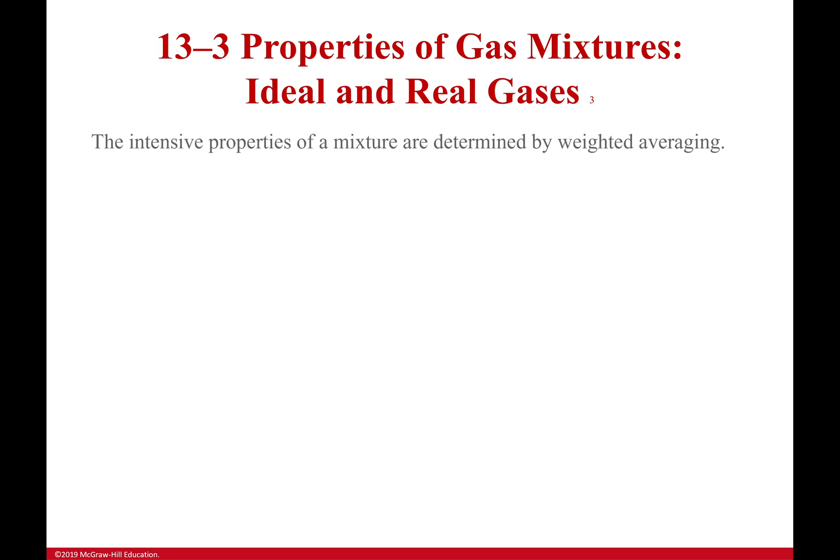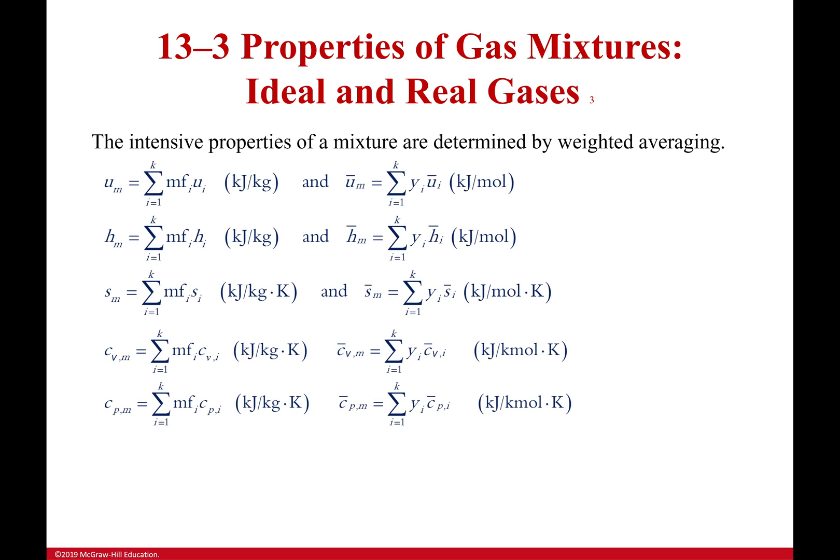Let's keep on moving forward. Now if you want the intensive properties, not the overall thing but the per mass for your mixture, then you have to use weighted averaging. We have equations, once again we're just going to divide this in half. And doing that I have mass on this side and I have moles on this side.